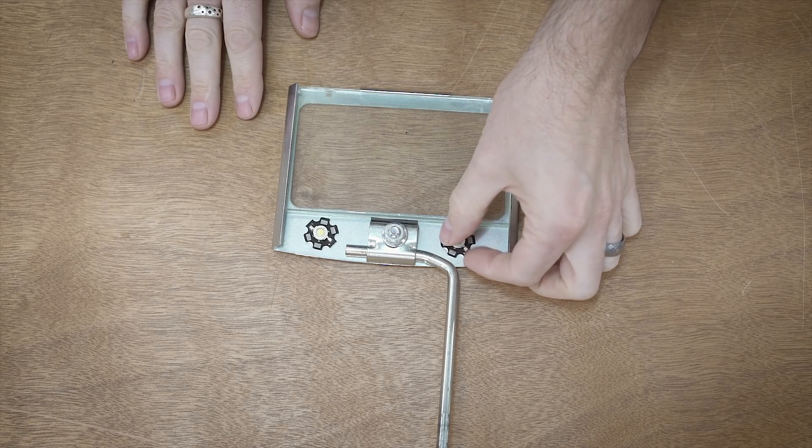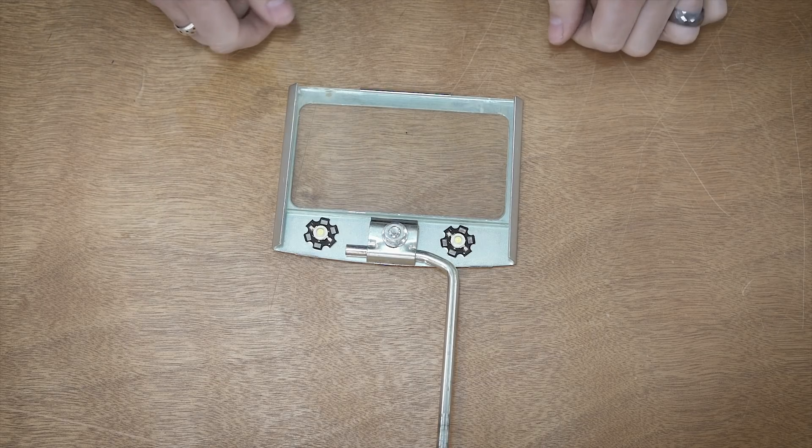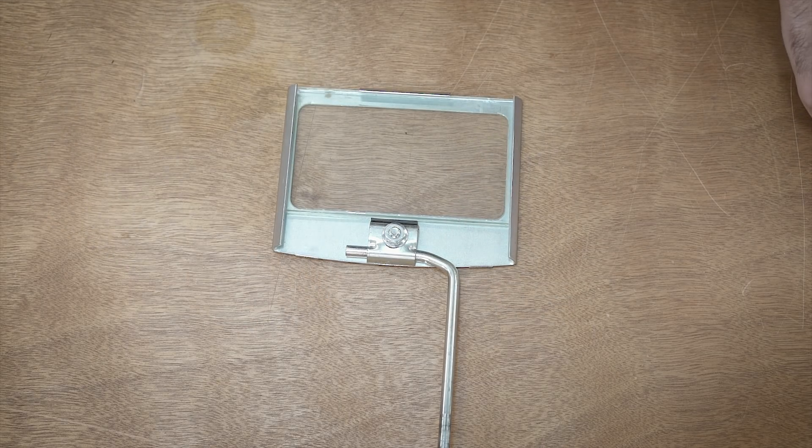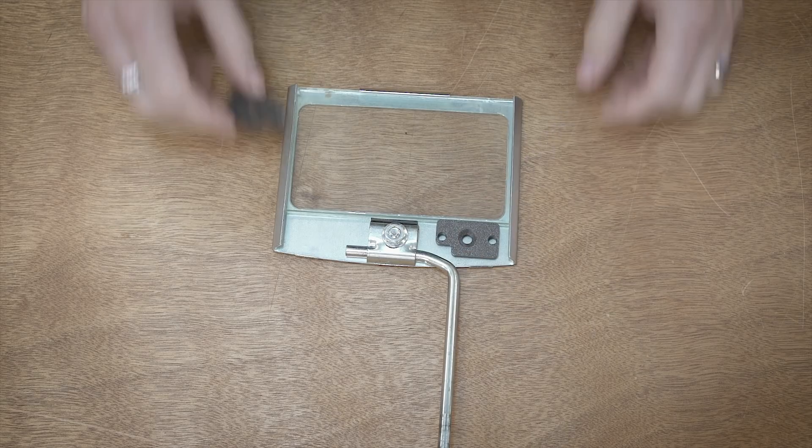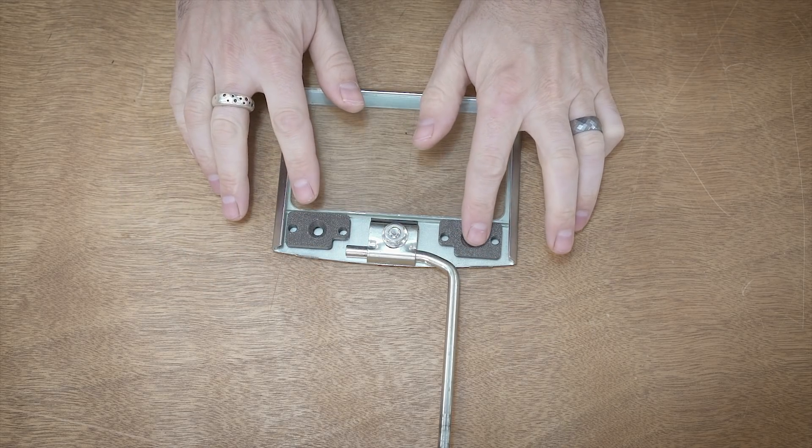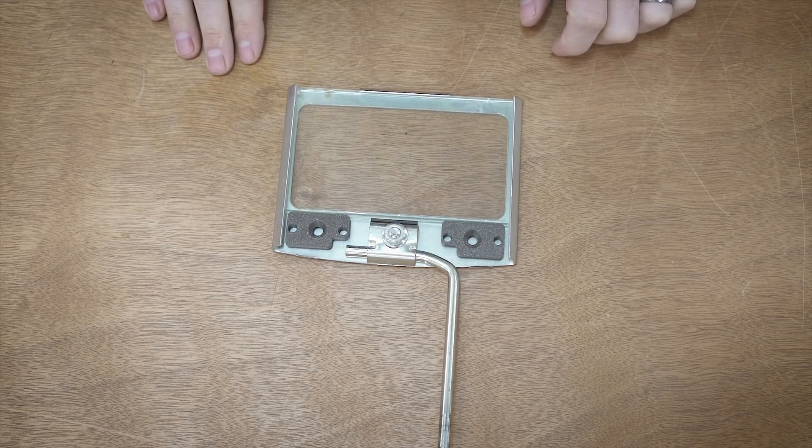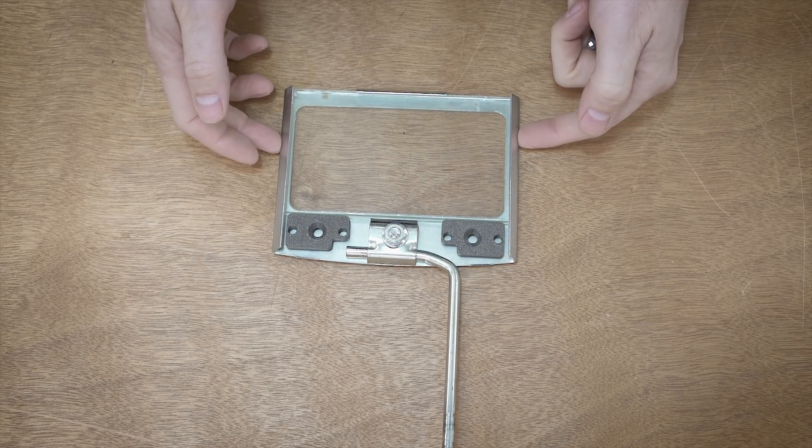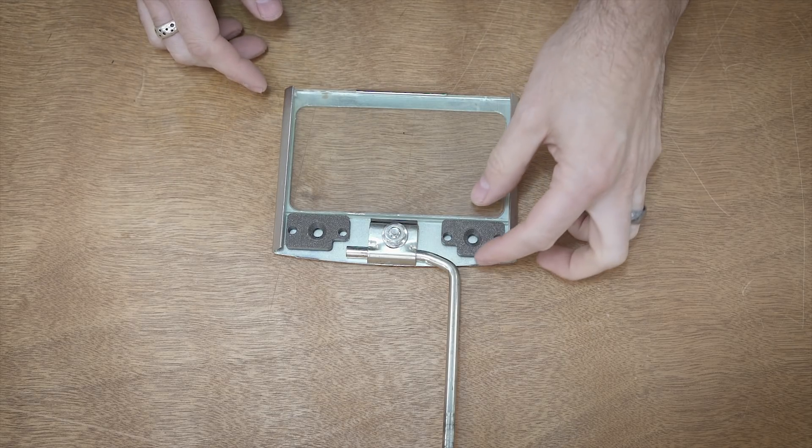I could just take some thermal epoxy and glue these down, but I want to go a little bit fancier. I turned to the 3D printer and made these two little adapter plates. These will hold the LEDs in place. I can actually screw them into the eye shield. The epoxy probably would have worked just fine.